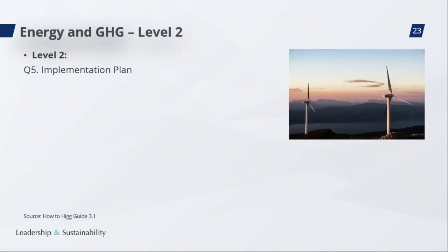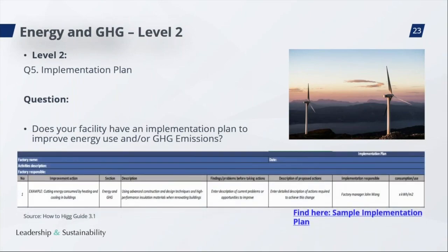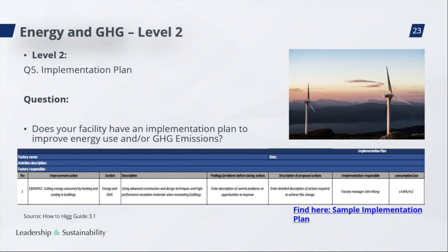The next question is about the implementation plan, which is a really important element of your program. Does your facility have an implementation plan to improve energy use and/or greenhouse gas emissions? You also need to upload a copy of the plan. Answer yes if you have a plan that demonstrates you are taking action to achieve your targeted reductions. Answer partially yes if you have a plan but have not started on all action items. The How to HIG actually has a template available – you can click the link at the bottom of the slide to download the Excel table with the implementation plan.